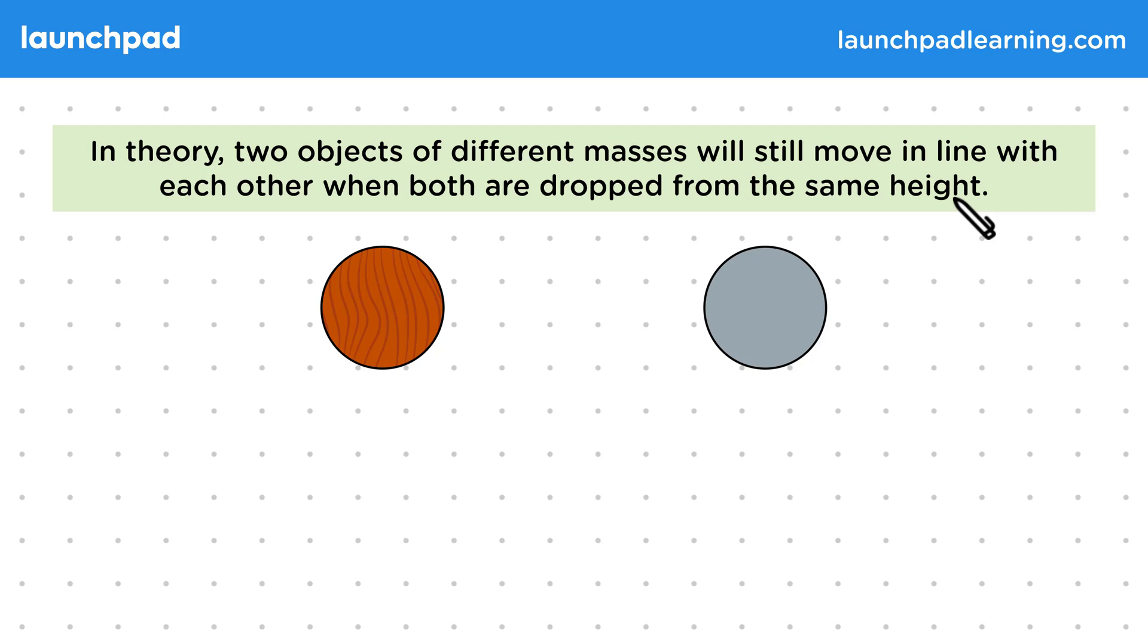Let's consider two balls made of different materials. One is wooden and one is metal. They have the same shape but different masses.